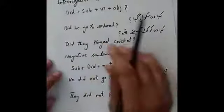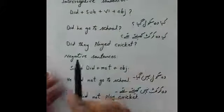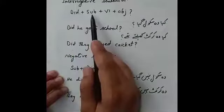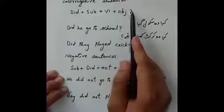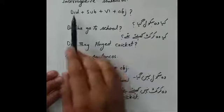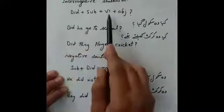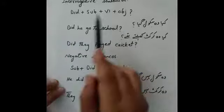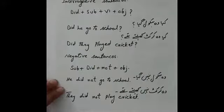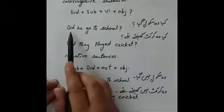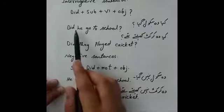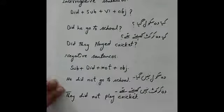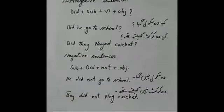Interrogative sentence کا جو structure ہوتا ہے: سب سے پہلے آئے گا آپ کا helping verb، پھر subject، اس کے بعد first form of verb، پھر object، اور آگے question mark ہوگا۔ یہاں did آئے تو اس کے بعد ہمیشہ first form of verb استعمال کریں گے، کیونکہ did already do کی second form ہے۔ ایک دفعہ did یوز کر لیا تو main verb کی second form نہیں بلکہ first form یوز کریں گے۔